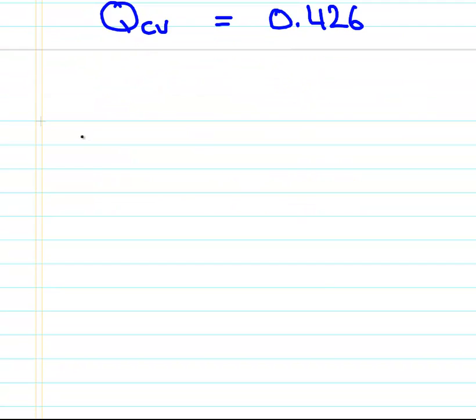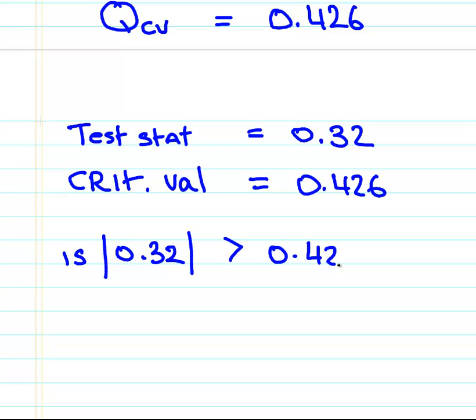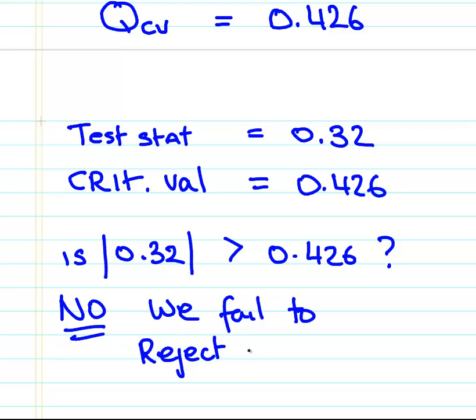Our test statistic was 0.32, our critical value is 0.426. The absolute value thing is not important here, but essentially what we're doing is: is 0.32 greater than 0.426? The answer is no. So what do we do in that case? We fail to reject the null hypothesis, H0 being the null hypothesis. That's it all together.